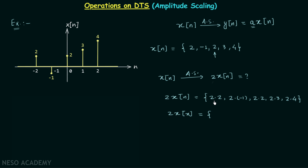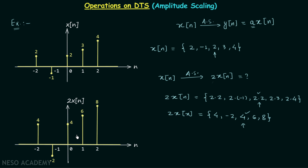Calculating those products, 2Xn = {4, -2, 4, 6, 8}. Don't forget the arrow mark indicating the value of 2Xn at n = 0. When plotted: at n = -2, 2Xn = 4; at n = -1, 2Xn = -2; at n = 0, 2Xn = 4; and similarly 6 and 8 for the remaining values.